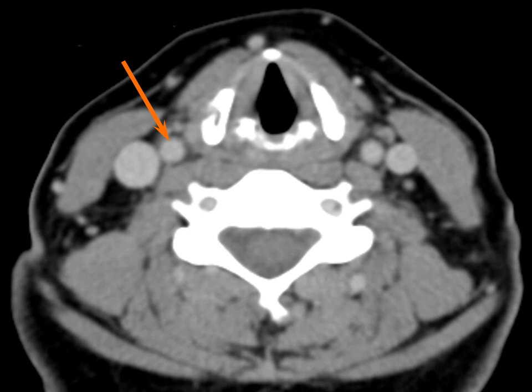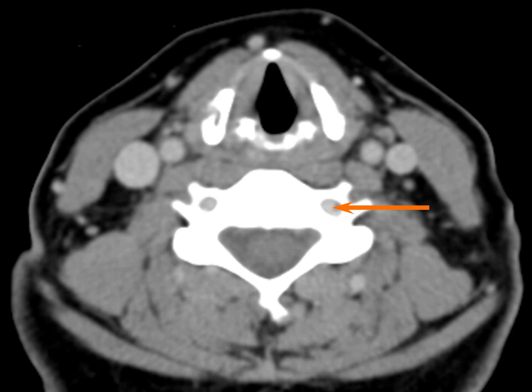Now let's talk about the vessels. The more medial and usually smaller of the vessels is the carotid artery — at this level, still the common carotid artery. Lateral to that is the internal jugular vein, which is variable in size but usually a little bigger than the carotid. Here are the vertebral arteries in the foramen transversarium of the vertebral body. This oval is the location of the cervical spinal cord — it's very hard on CT to distinguish between the cord and surrounding CSF, but MRI and myelography are ideal for that.